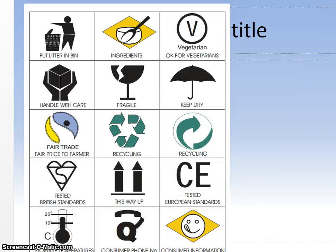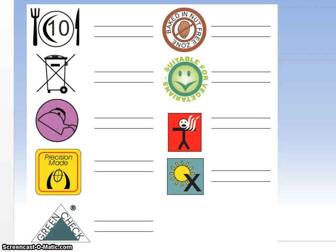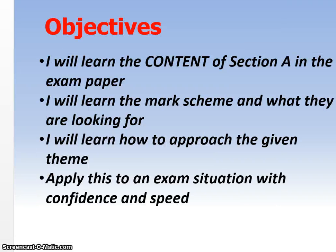Packaging symbols to be aware of include: handle with care, fragile, keep dry, and recycling symbols. Others shown include keep out of reach of children, wheat intolerance, the British toy safety symbol, and sustainable forest. You can pause to look at these and have a go at identifying them yourself.